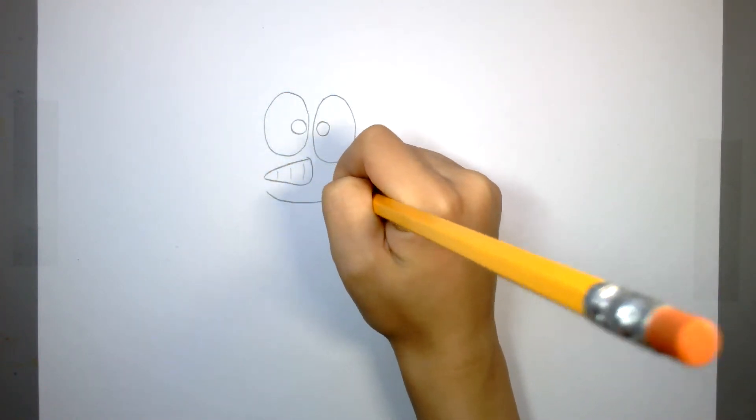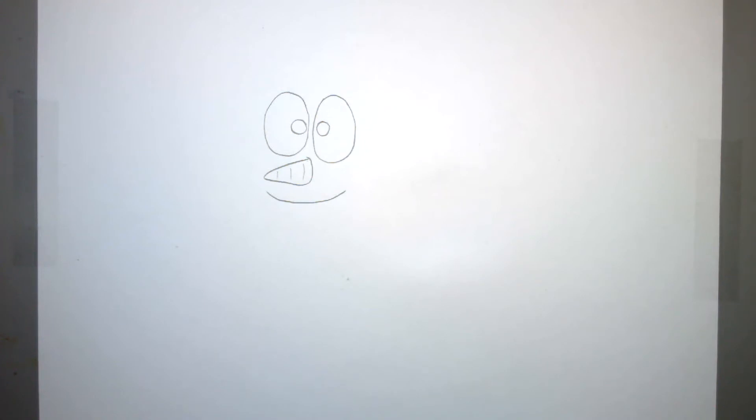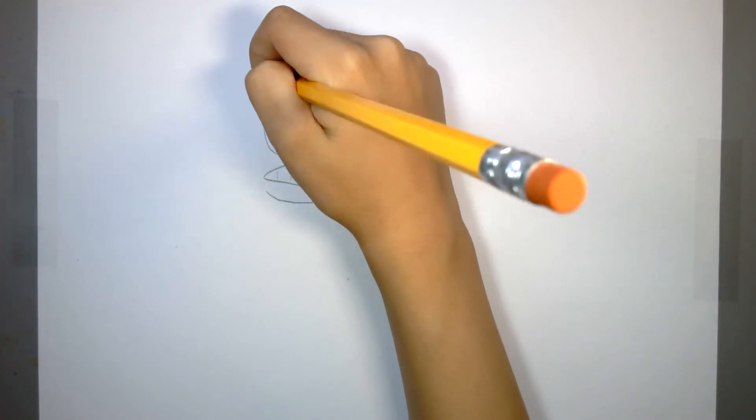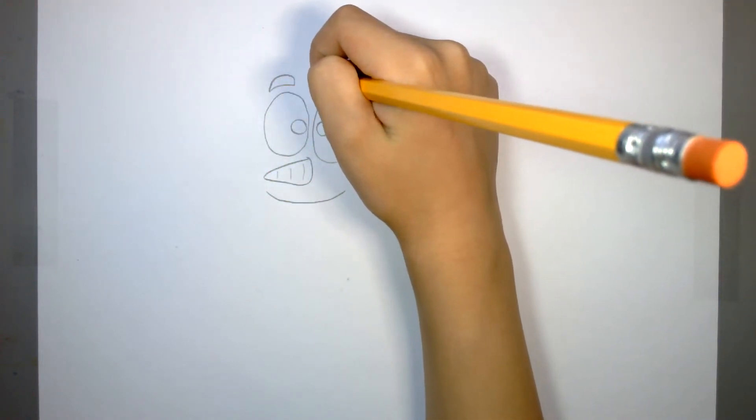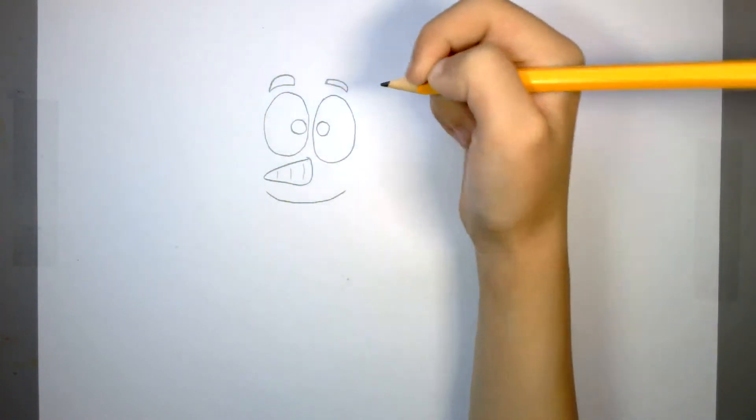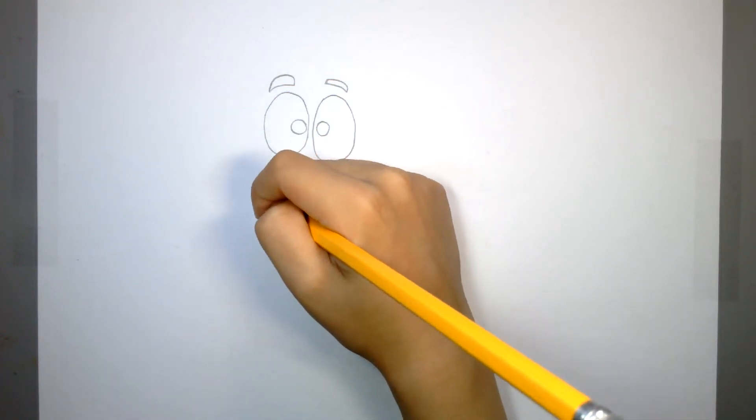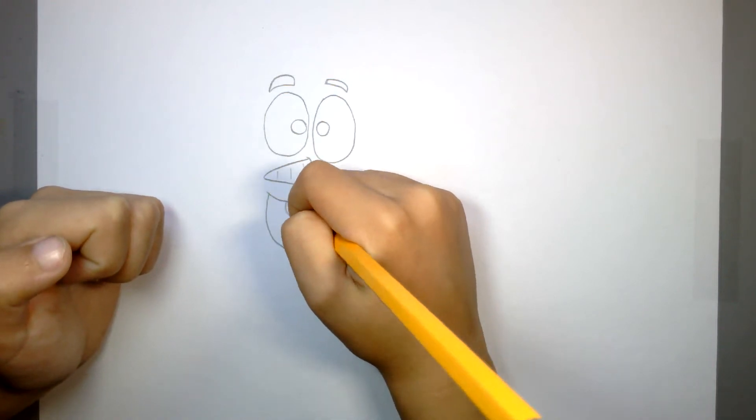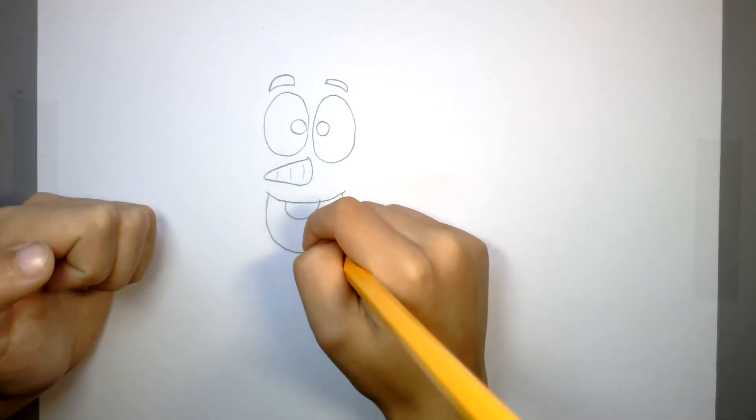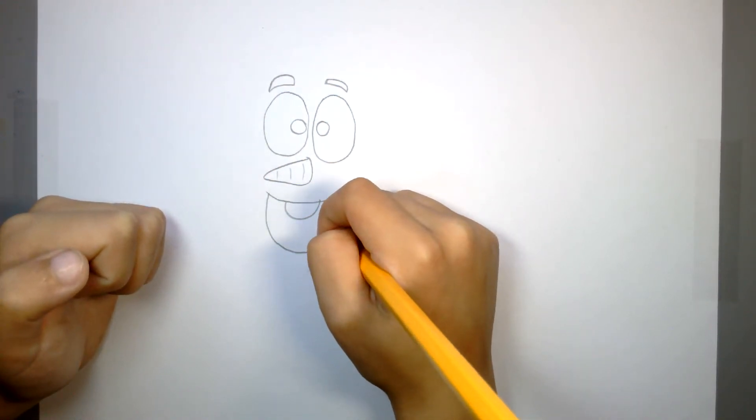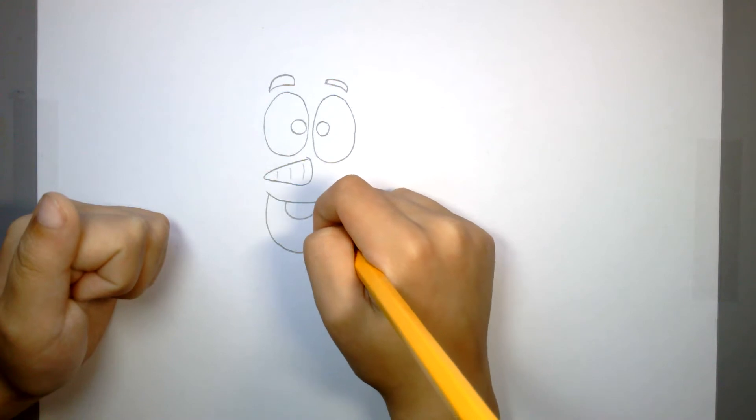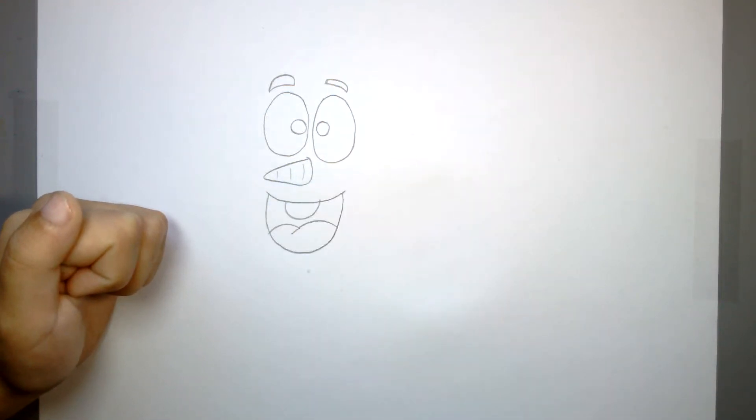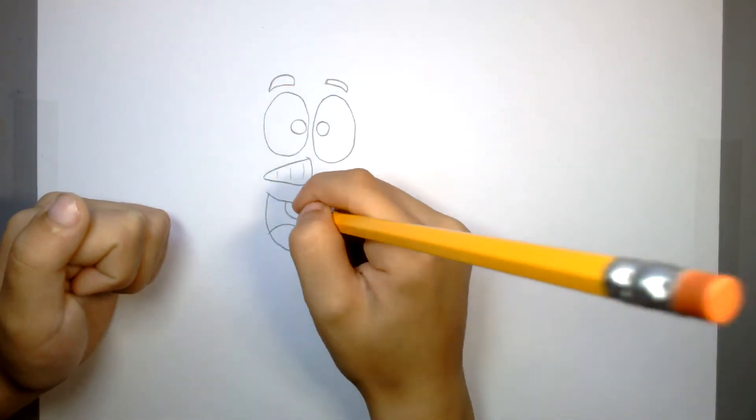Then we're going to do the smile. Okay, maybe I should add the eyebrows. Let's see if that can make it more better. Okay, that's a little better. Now we're going to do the mouth, and then the tooth. Now we're going to do the tongue. That right here is the tooth.